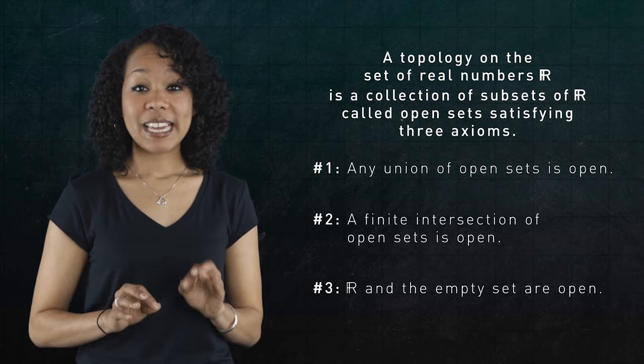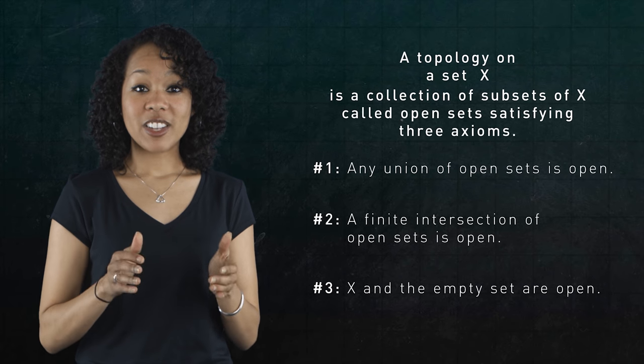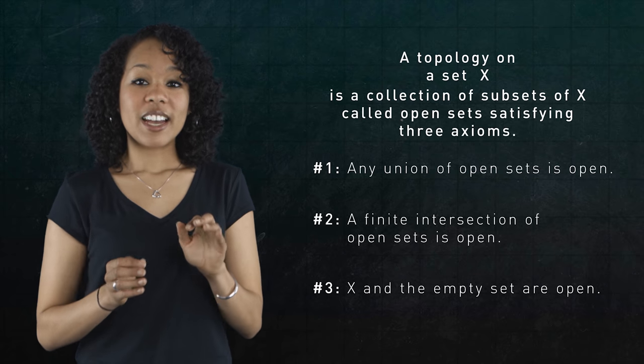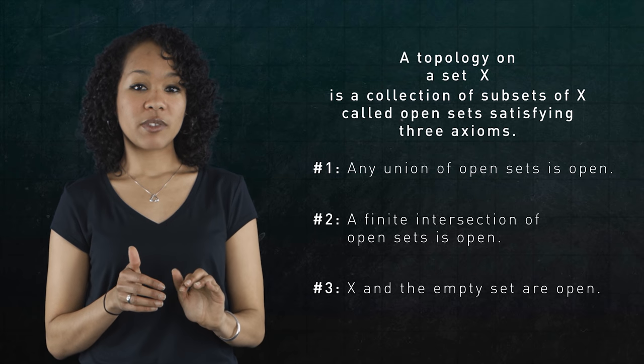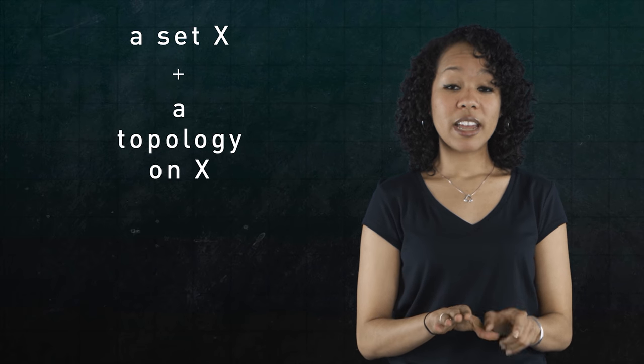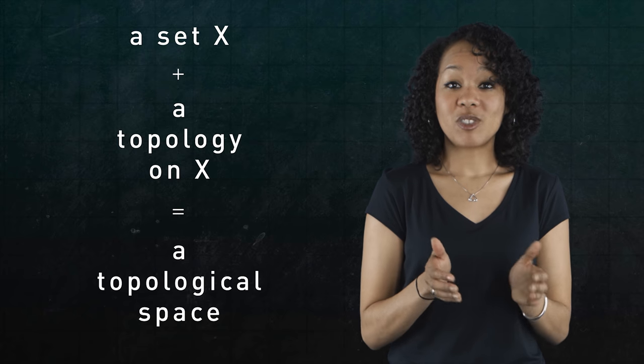More generally, we can replace R by any set X. And this defines a topology on the set X. And this is the definition we've been waiting for. A topology on X is a collection of subsets satisfying these three axioms. By the way, it's possible to define many different topologies on a set. But once you choose one, that set together with its topology is called a topological space.